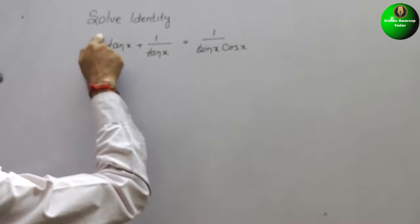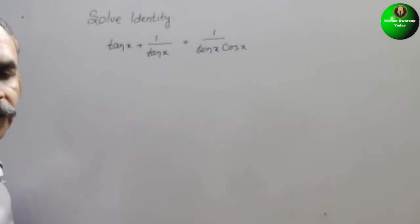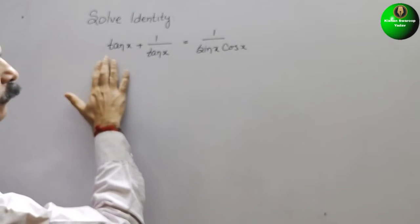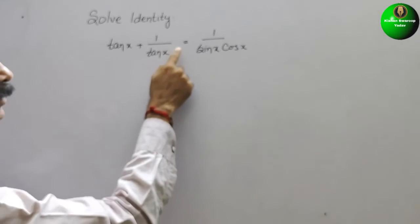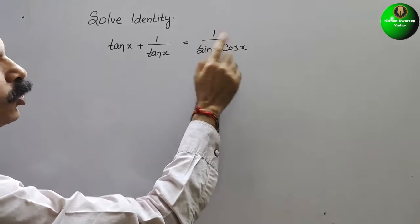Your question is solve identity. See that. So we have to prove tan x plus 1 by tan x is equal to 1 by sin x cos x.